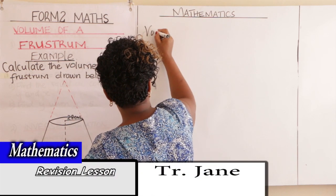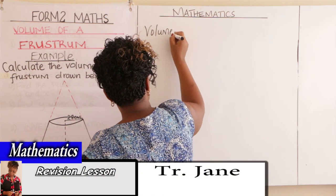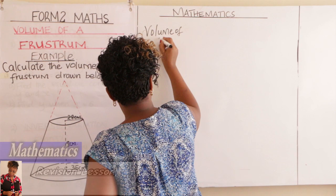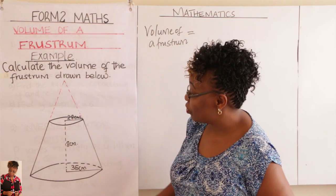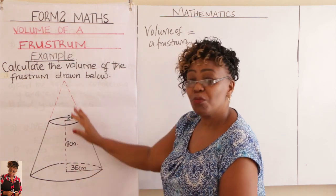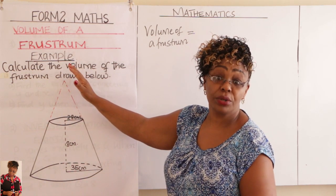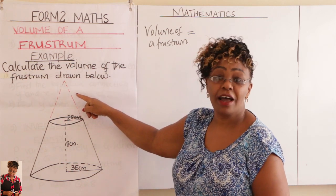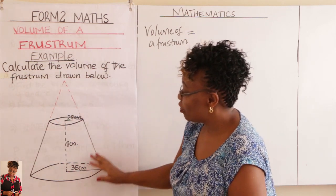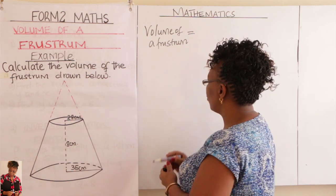Volume of a frustum, learner, is got by finding the volume of the original cone and then you subtract the volume of the smaller cone. Volume of the original cone minus the volume of the smaller cone.